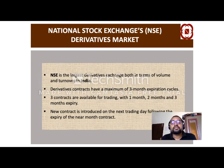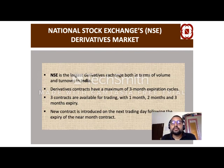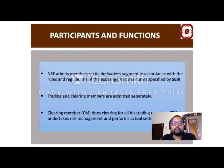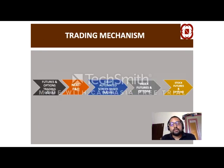NSE is one of the major stock exchanges in the world and in the country for dealing with derivatives. They have a three-month expiration cycle — three contracts are available for trading with one-month, two-month, and three-month expiry. A new contract is introduced on the next day following the expiry of the near-month contract. SEBI is the regulator, with trading members and clearing members as participants. NSE's F&O segment — Futures and Options — uses Fully Automated Screen Based Trading, covering index futures and options as well as stock futures and options.